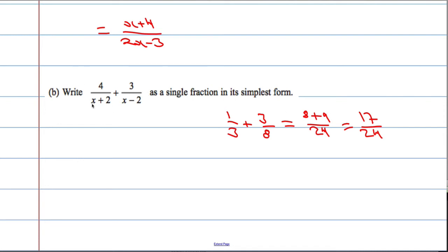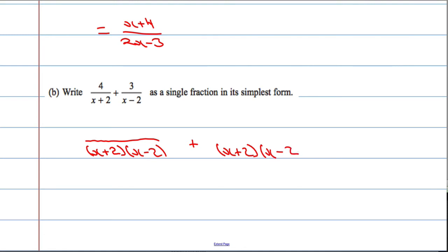Now, in this case, a very simple way of making a common denominator is to multiply the two denominators together. So that's exactly what we're going to do. So we're going to do x plus 2 times x minus 2. And that's going to be the common denominator for both.